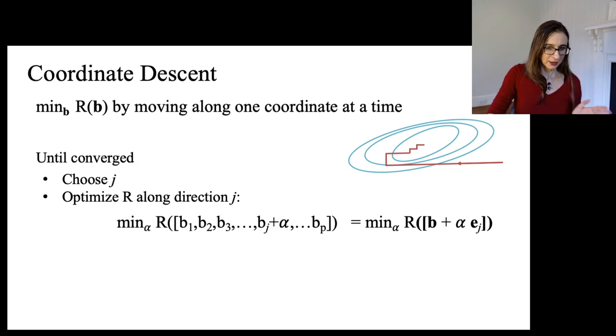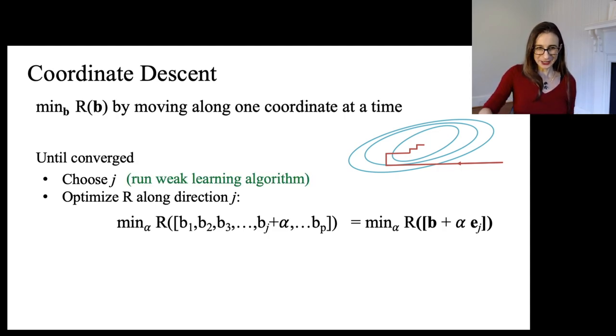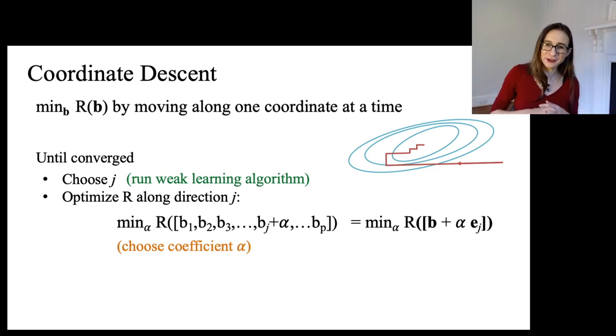So how are we then doing coordinate descent? Well, until we're converged, we're supposed to choose J, which in this case means run the weak learning algorithm. And then we optimize the function along direction J by choosing a coefficient alpha to minimize the objective. So we're going to actually derive the expression for alpha as a line search in that direction, kind of in the next video.